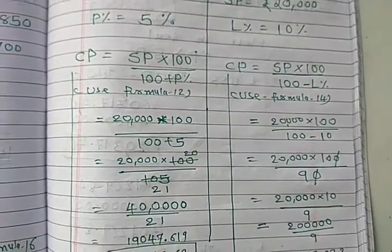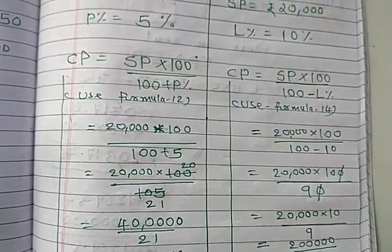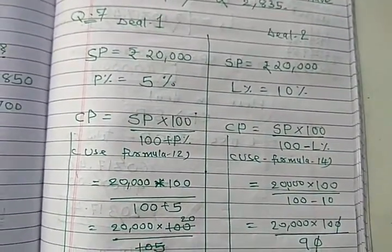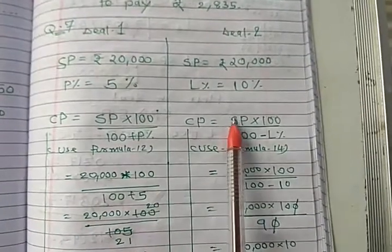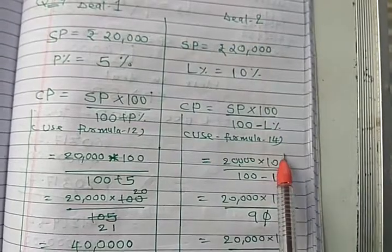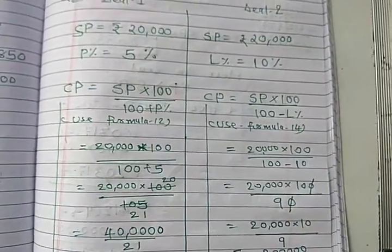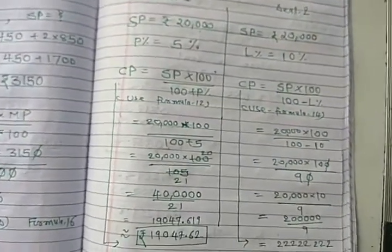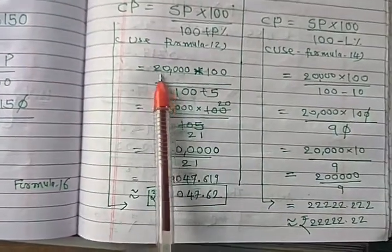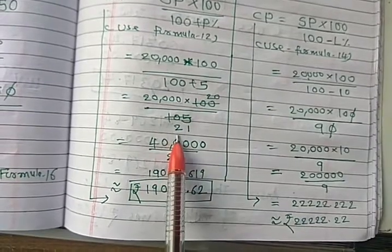So like this way we can count. You have to find out the cost price because SP is given. So when SP and percentage is given, we use which formula? Use formula number 12. So when SP and percentage is given you use formula number 12. So like this way you can implement the formula. Here SP and loss percentage is given, so at that time you use formula number 14.